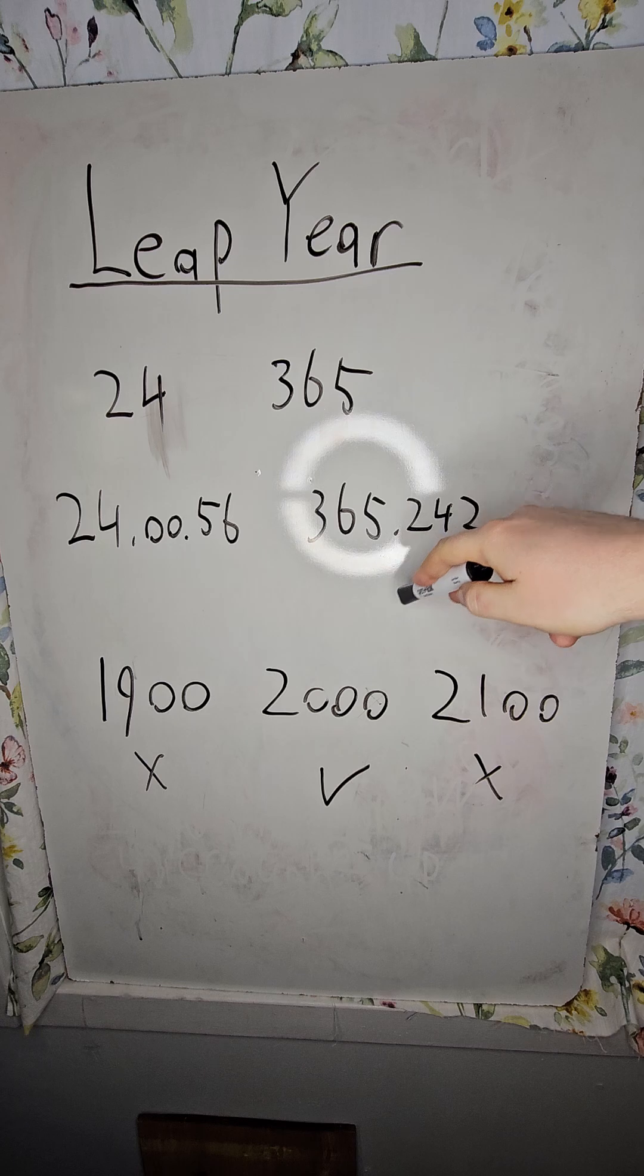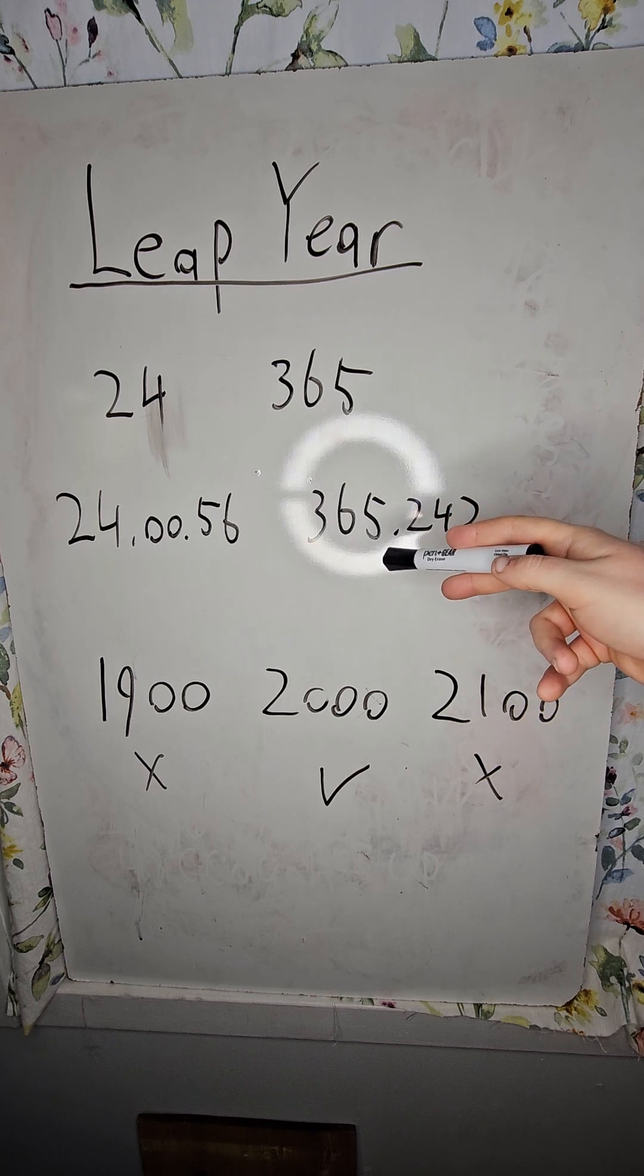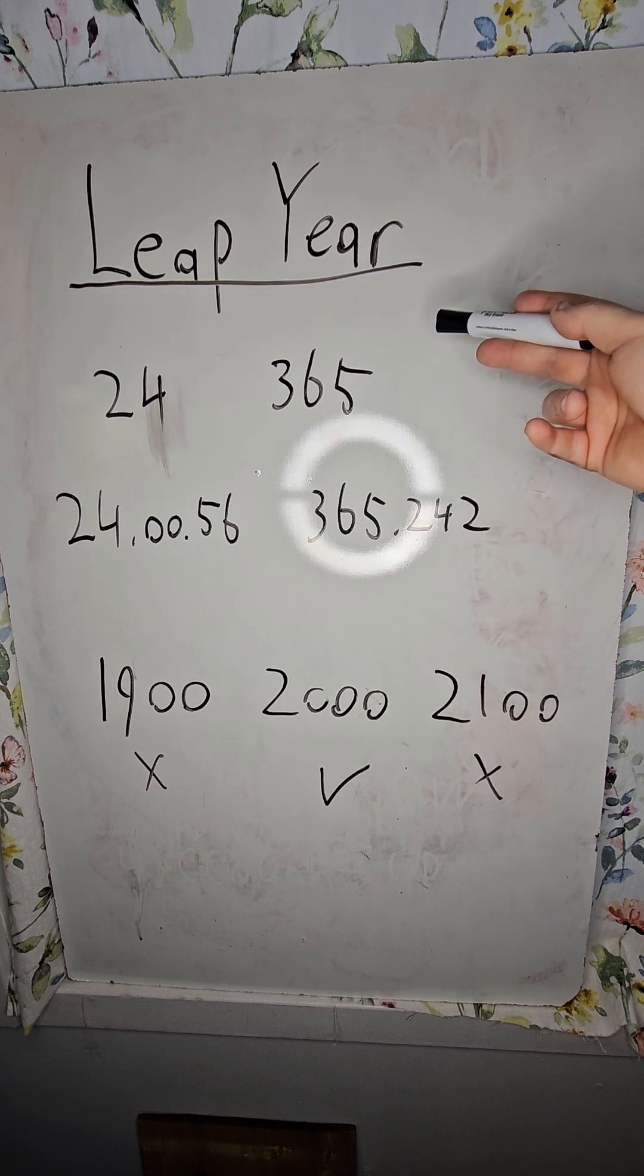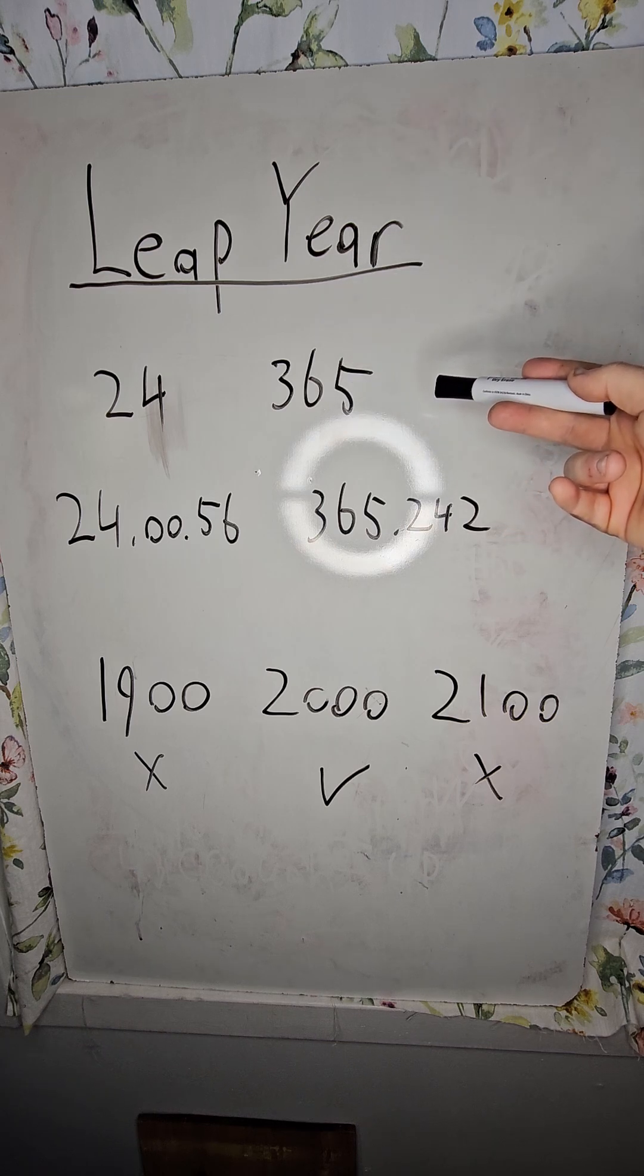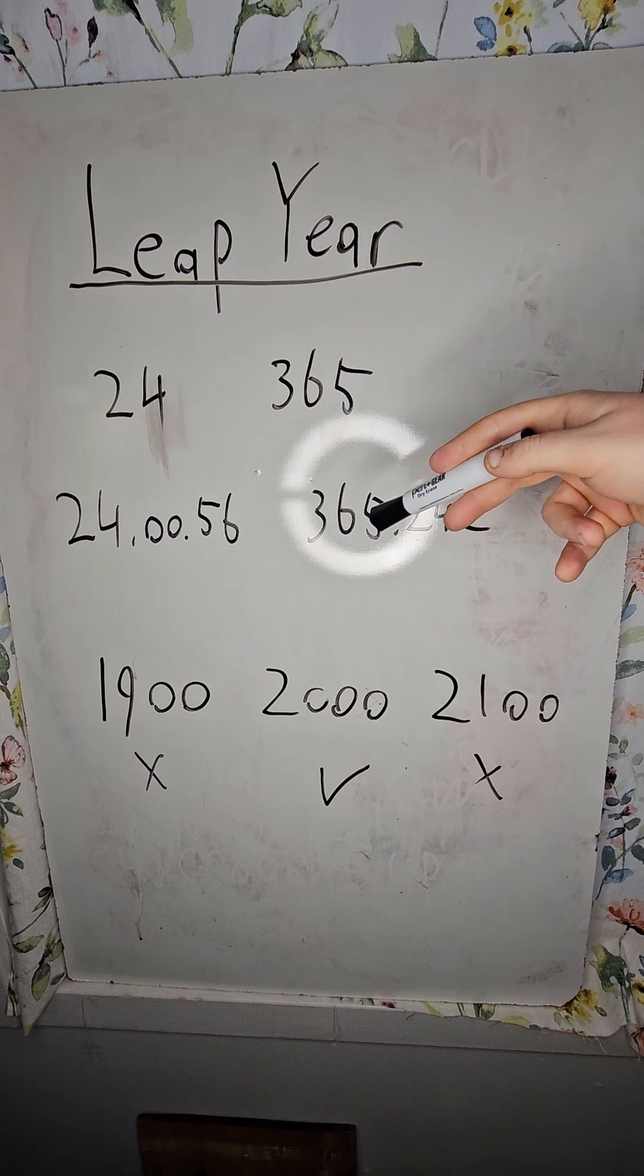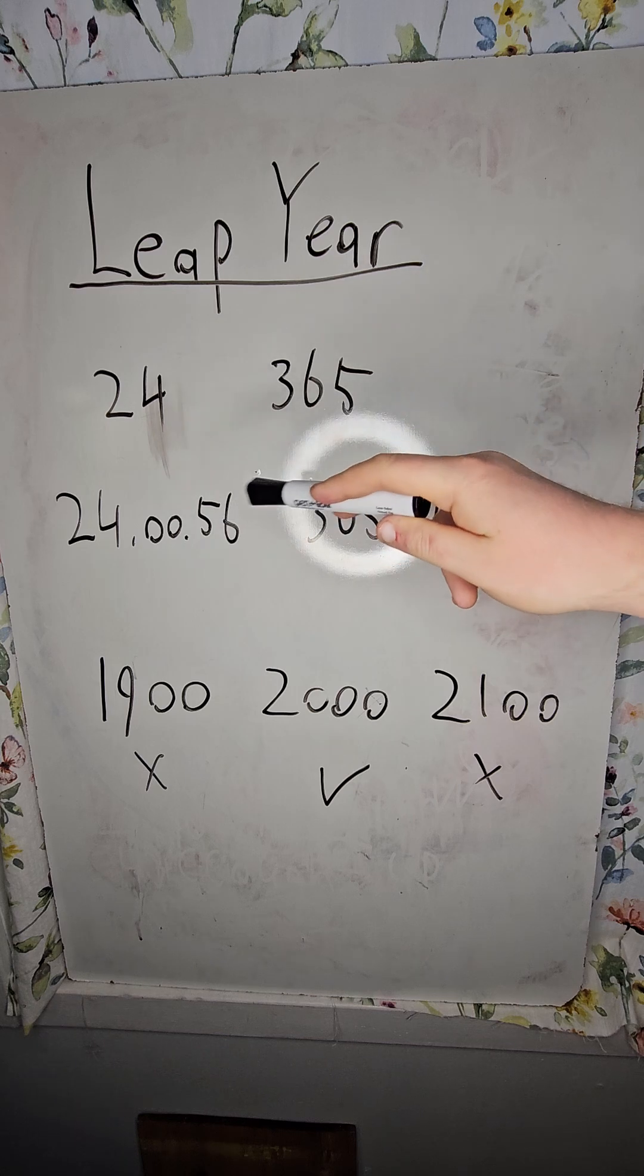The thing is, because of these two numbers, time keeps adding up. If we didn't have that leap year to compensate every four years, pretty soon we would have winter in July in the northern hemisphere, because in the southern hemisphere it's different. But that's beside the point.